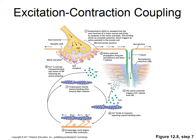Skeletal muscle action potentials work like unmyelinated neurons — every portion of the sarcolemma fires an action potential, including down the T-tubules. T-tubules lie close to the sarcoplasmic reticulum. As the action potential travels down the T-tubules, it opens calcium channels. Calcium rushes out, binds to troponin, moves tropomyosin off the binding sites, initiating cross-bridge cycling and muscle contraction.